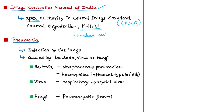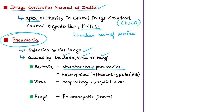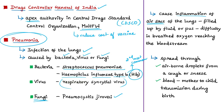Pneumonia is an infection of the lungs that can be caused by bacteria, viruses, or fungi. Among bacteria, it is commonly caused by Streptococcus pneumoniae and also by Haemophilus influenzae type b (HIB) — the second most common cause of bacterial pneumonia. Among viruses, Respiratory Syncytial Virus is the most common viral cause. Among fungi, Pneumocystis jirovecii is the causative agent. Pneumonia causes inflammation of air sacs in the lungs, which fill up with fluid or pus, making it hard for oxygen to enter the bloodstream.